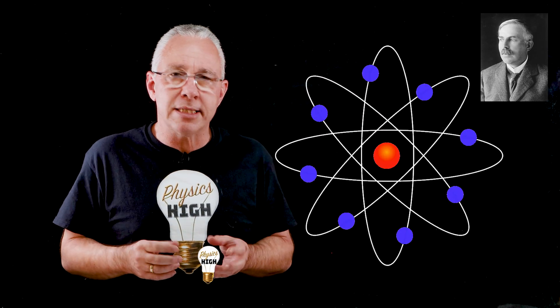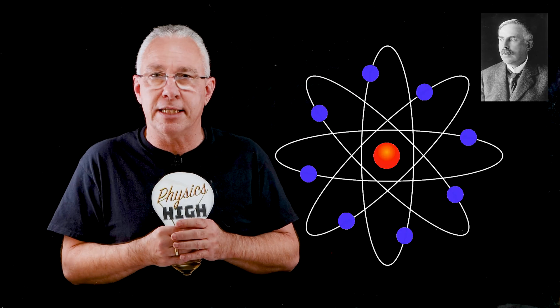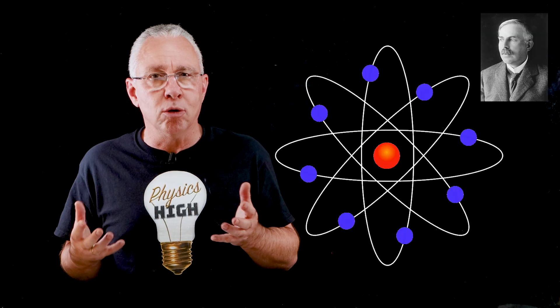In 1911, Ernest Rutherford had come up with the planetary model of the atom. Most of the mass is centered in the nucleus of the atom where the electrons are in orbit, much like planets orbiting our Sun. But it had a fundamental problem.